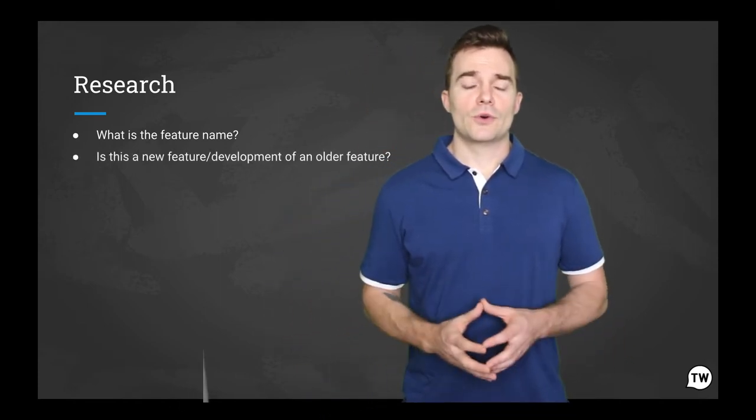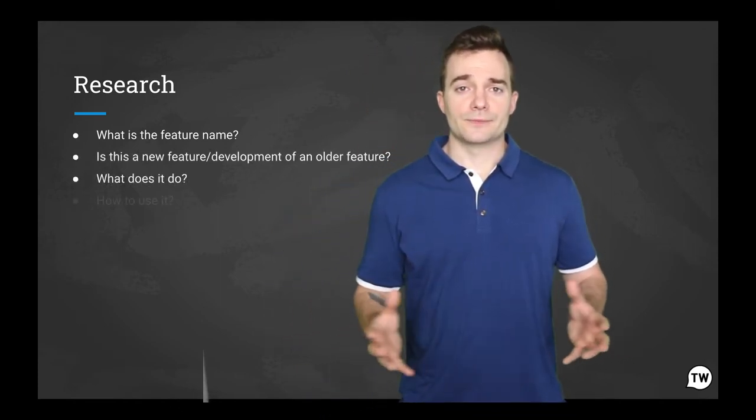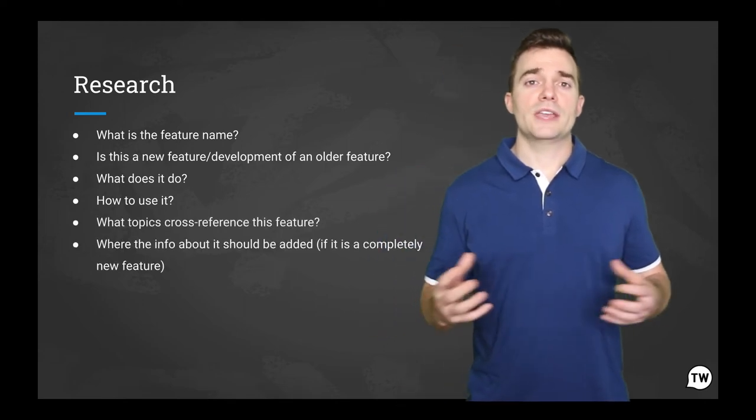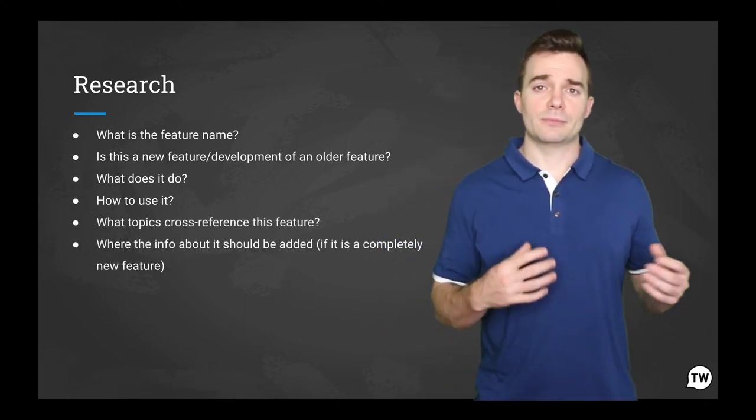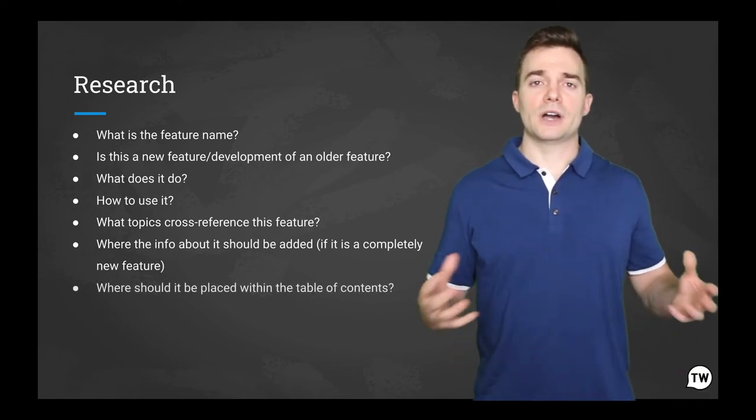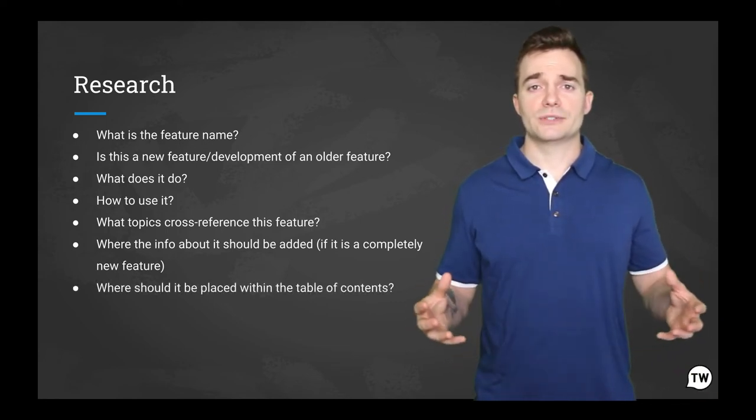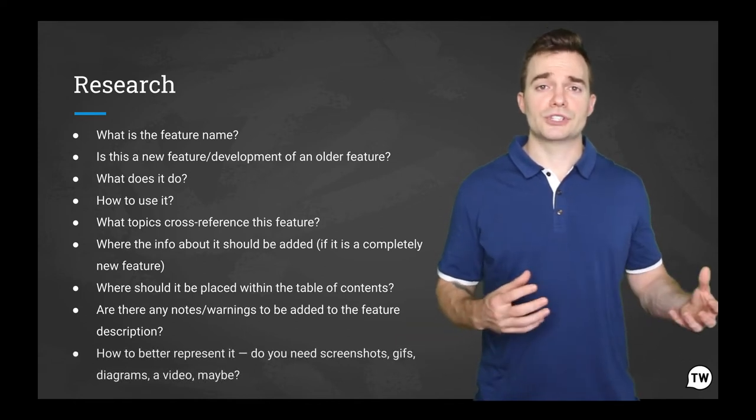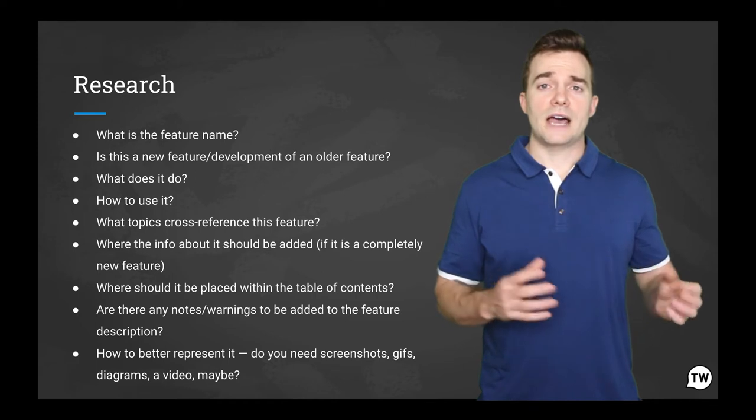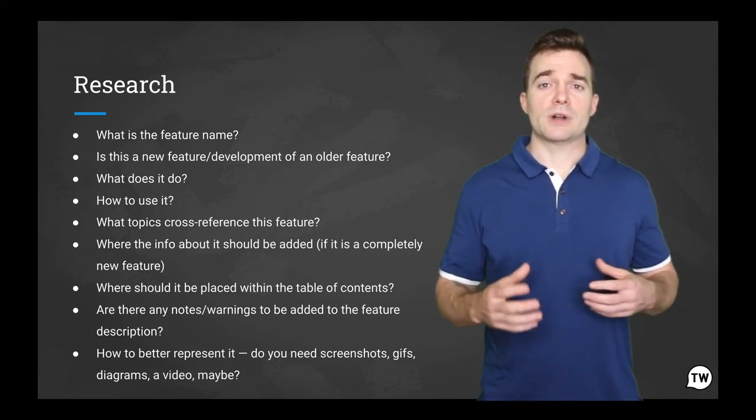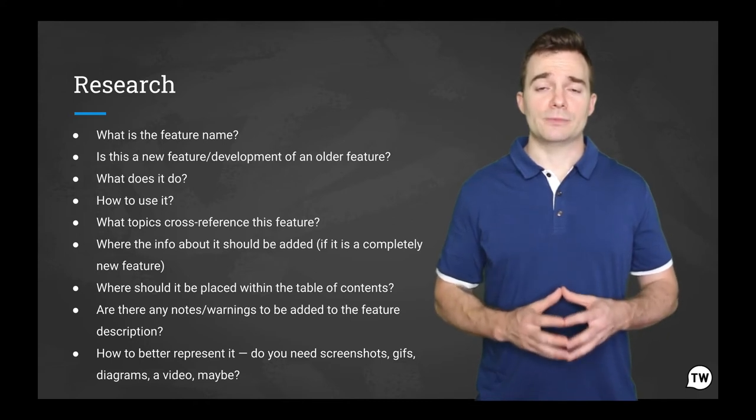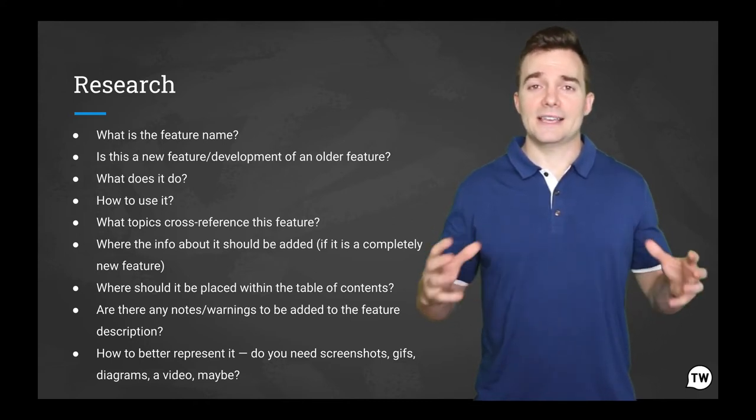Here's an example, you need to describe a new feature of your software companies that it is developing. It sounds pretty straightforward. You need to learn what it's called and what it does and how to use it. And off you go writing a help topic on a subject matter. However, it's not that simple. Here's a bigger list of questions you might want to try and figure out before writing anything. What is the feature name? Is this new feature development of an older feature? What does it do? How to use it? What topics cross-reference this feature where the info about it should be added? If it's a completely new feature, where should be placed within the table of contents? Are there any notes, warnings to be added to the feature description? How should you represent it? Should you use screenshot gifts, diagrams or video? Now that looks like a more or less proper list of questions you need to answer in this scenario before attempting to create a new help topic. So it is not as easy as it seems.